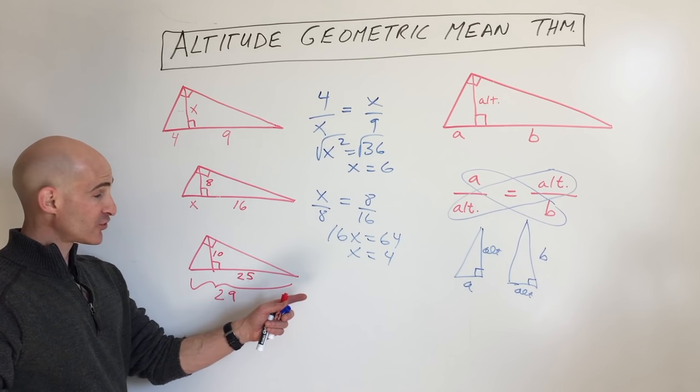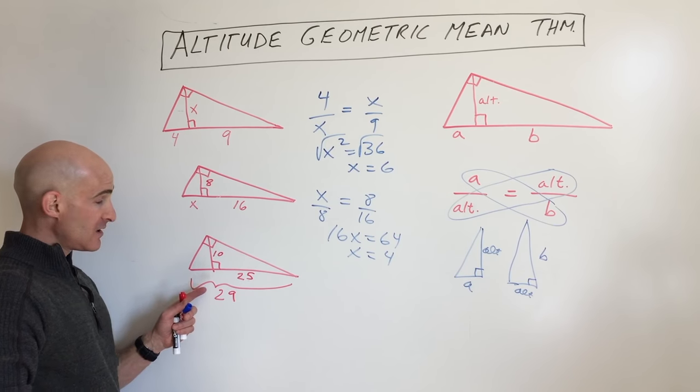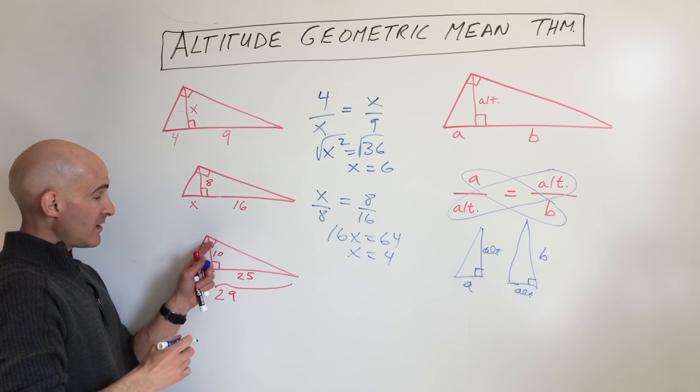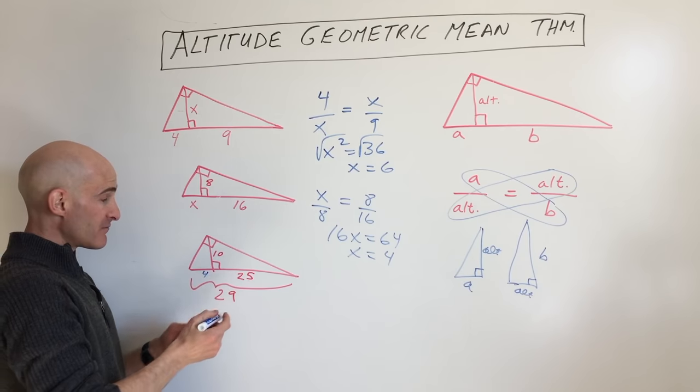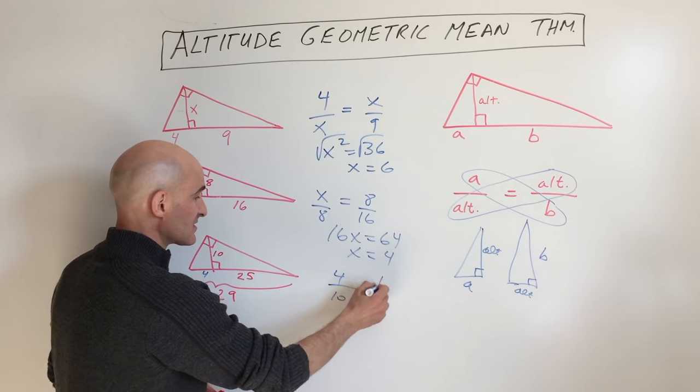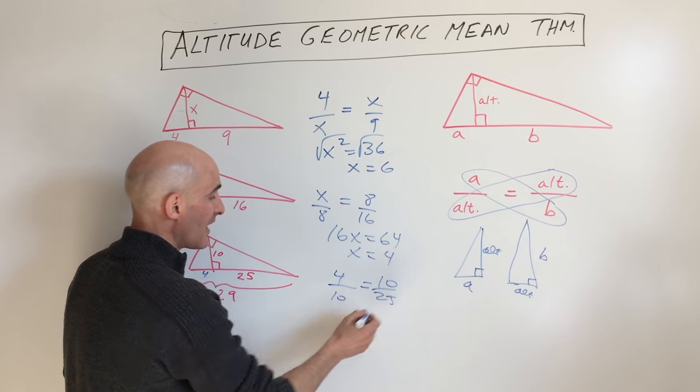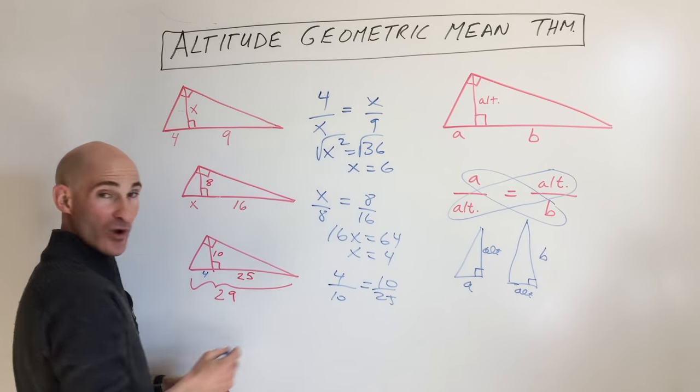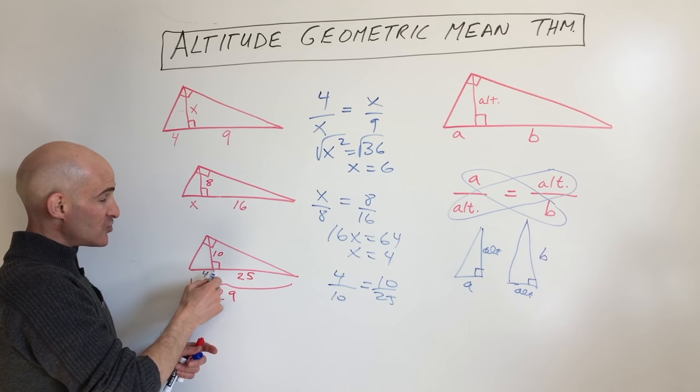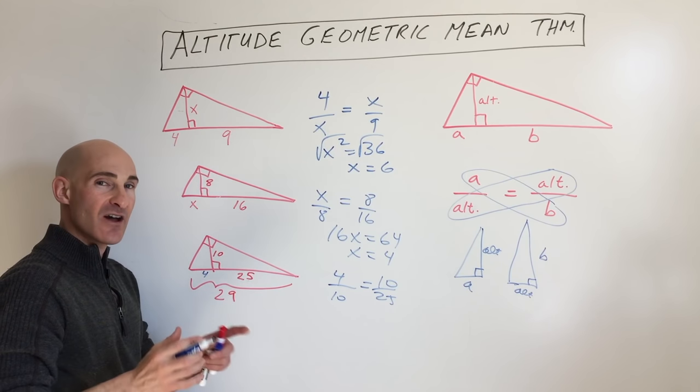Last example, sometimes we'll give you this whole length. So by taking 29 minus 25, we see that this is 4. Let's just verify that this works. You can see that 4 is to 10 as 10 is to 25, 100 equals 100. So the altitude here is the geometric mean of the two parts of the hypotenuse that it divides it up into.